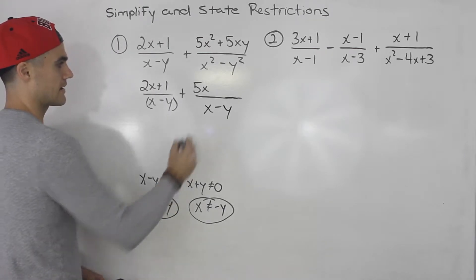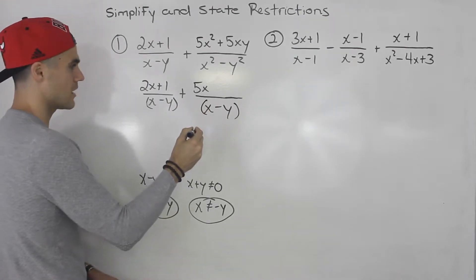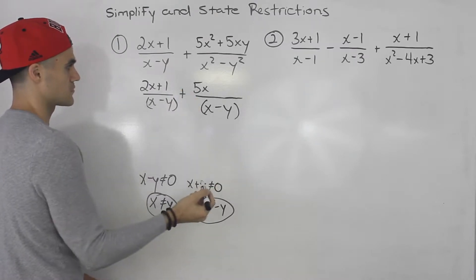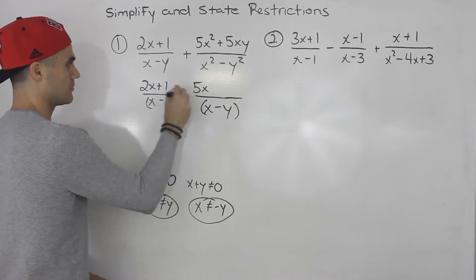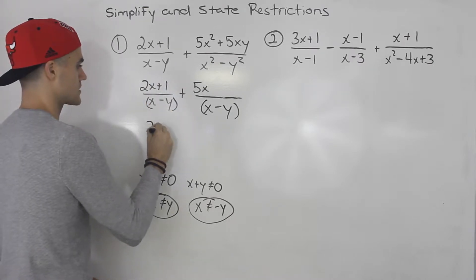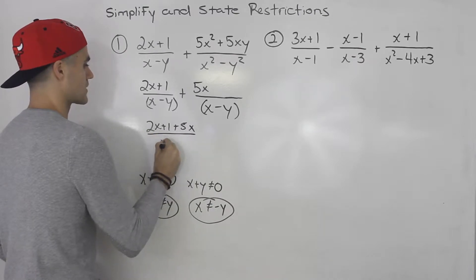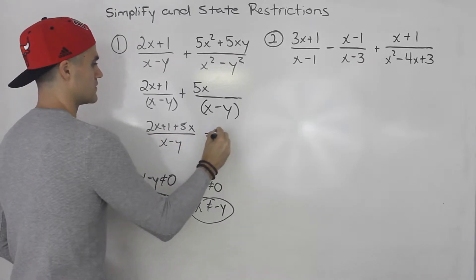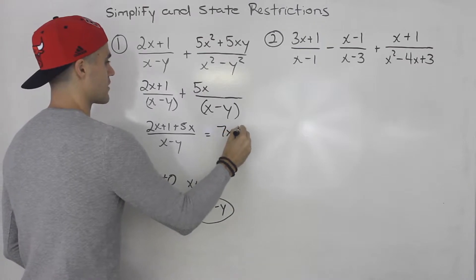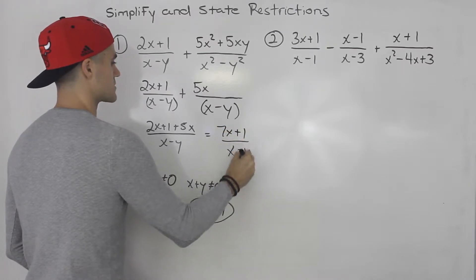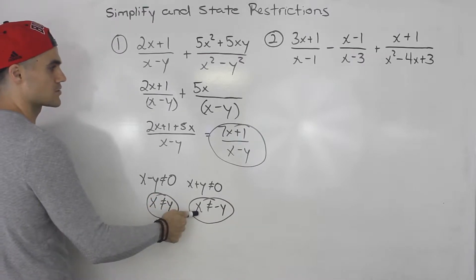Now both expressions share the common denominator x minus y, so we can add the numerators: 2x plus 1 plus 5x, all over x minus y. Adding the like terms gives us 7x plus 1 over x minus y — that's your final answer, and those are your restrictions.